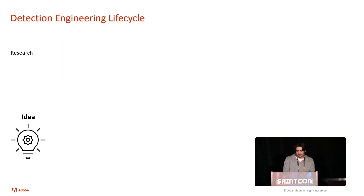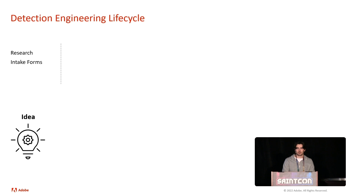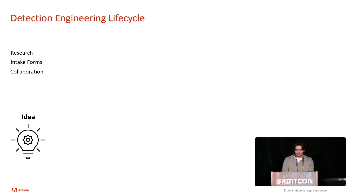You start with an idea. Like I mentioned earlier, this can be something internal, like your team doing research — reading different articles and bulletins and figuring out something you want to build an alert on. You can also use intake forms: a formal approach where you host an intake form and your SOC analysts or external teams can submit an idea for detection they'd like to see. Or you can do collaboration, taking information from those previous teams and their data to build security alerting.